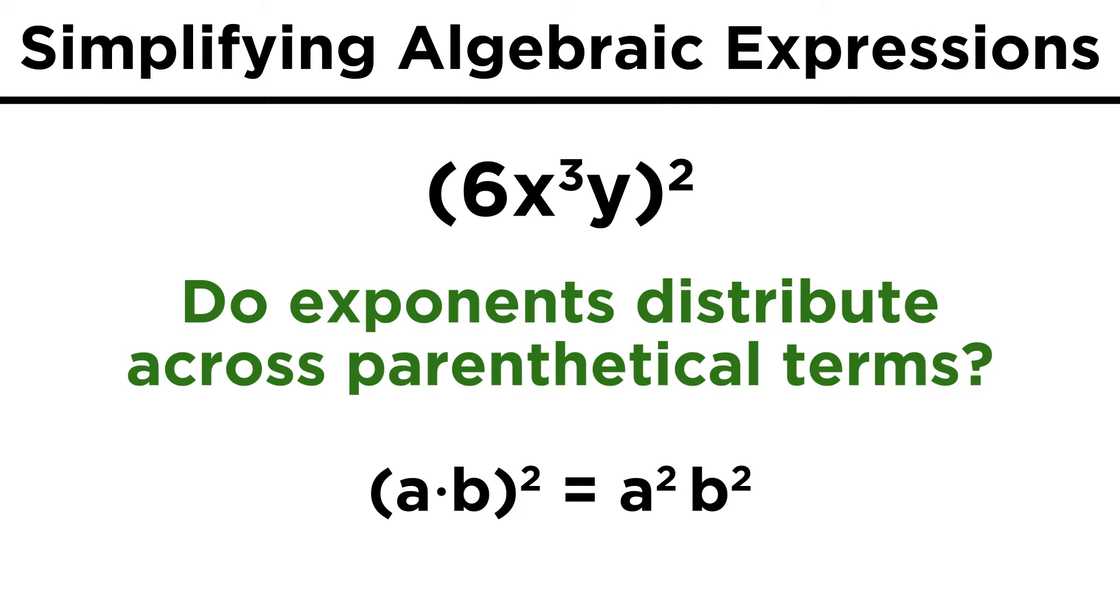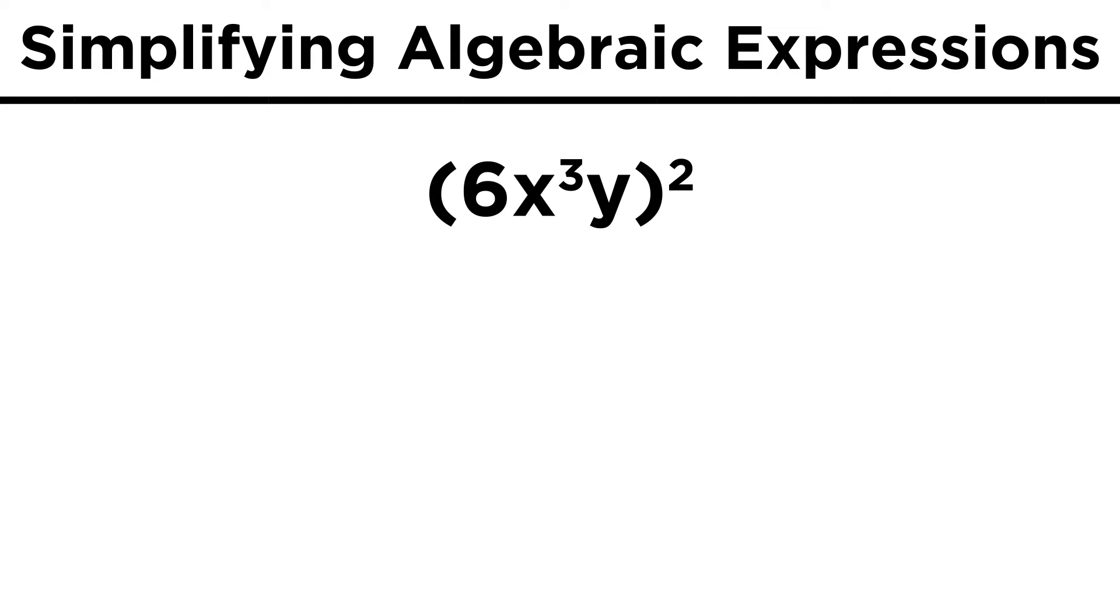But a times b quantity squared is indeed equal to a squared times b squared. This is easy to prove because a b squared is a b times a b, and since multiplication is associative, we can shuffle these around to get a a b b, or a squared b squared. So we can look at this term and rewrite it as six squared times x cubed squared times y squared.